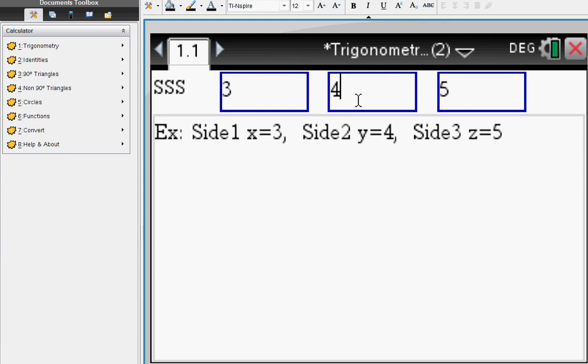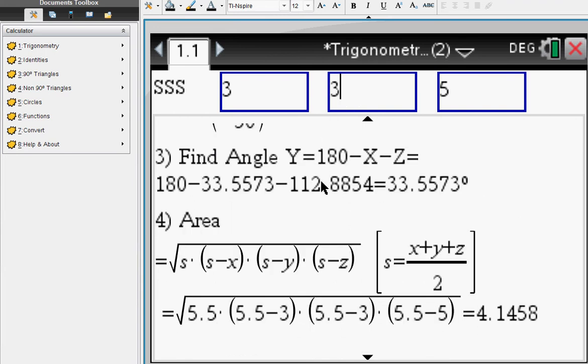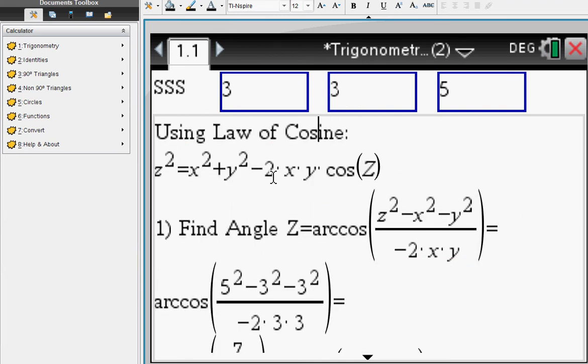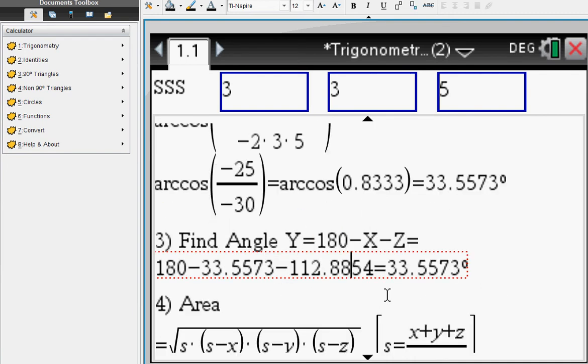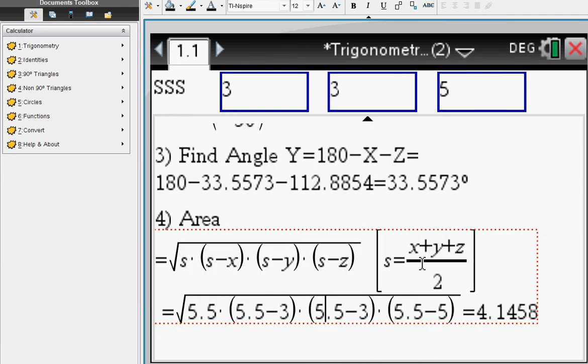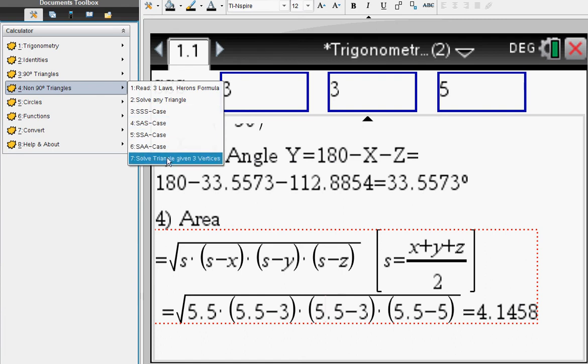If you're given three sides, you enter your three sides, and then you can see the Law of Cosines is applied here to find the first angle Z. It turns out the first angle is 33 degrees, which we just saw on the previous screen. The next angle is also going to be 33 degrees. The area using Heron's formula turns out to be this. So all triangles, either 90 or non-90 degrees, can be solved step-by-step.